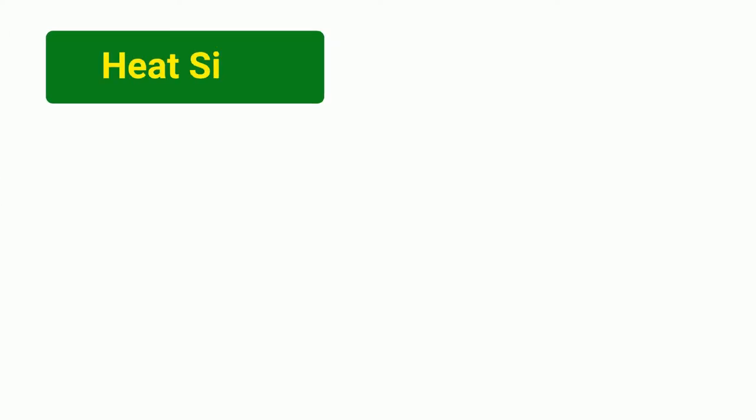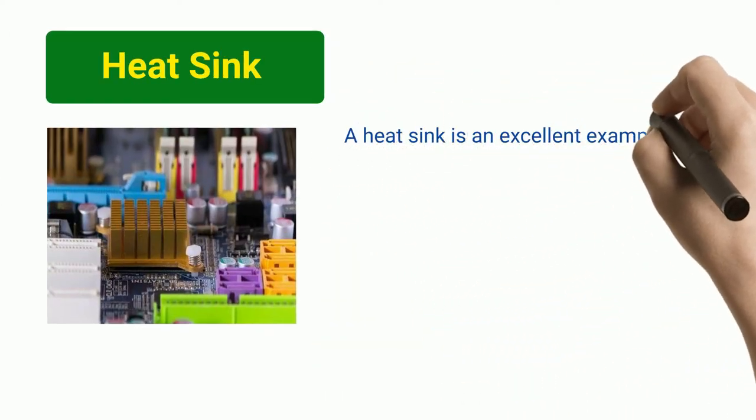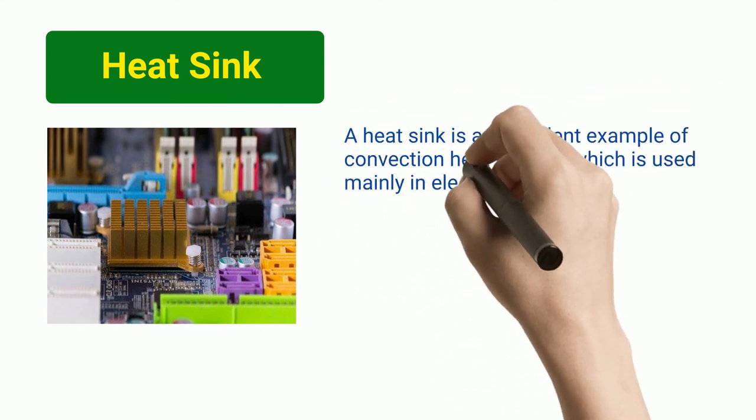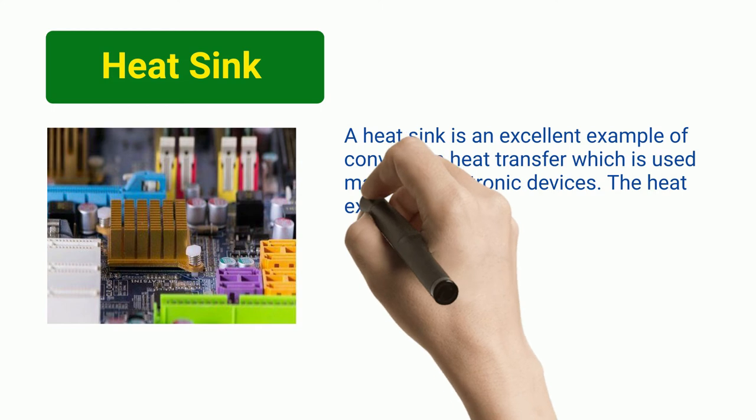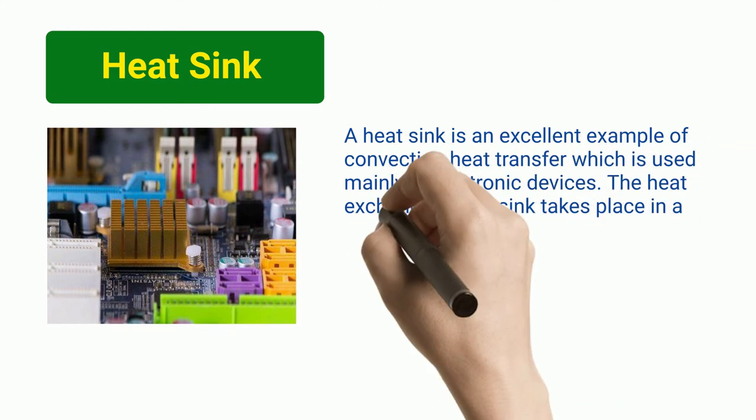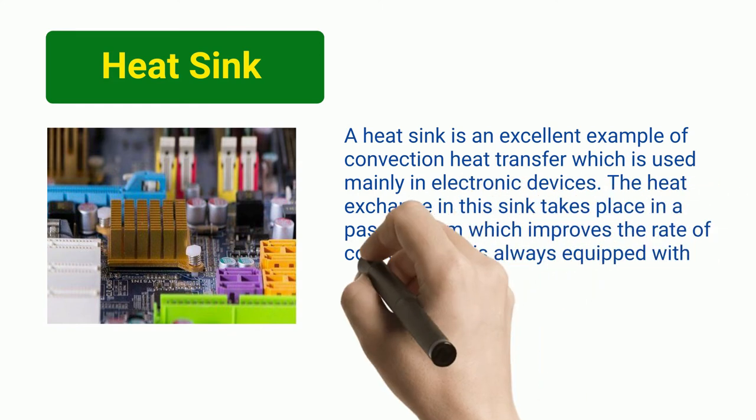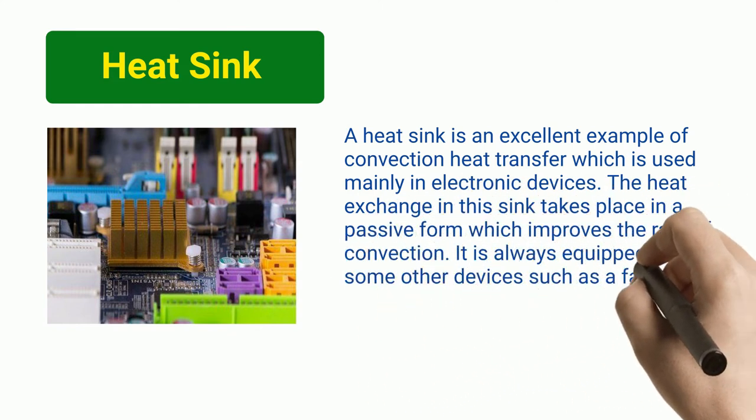Heat Sink: A heat sink is an excellent example of convection heat transfer, which is used mainly in electronic devices. The heat exchange in this sink takes place in a passive form which improves the rate of convection. It is always equipped with some other devices such as a fan to maintain the temperature.